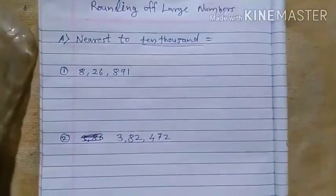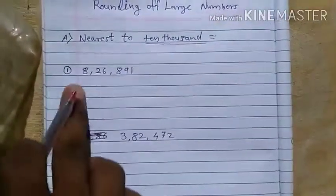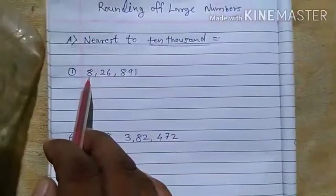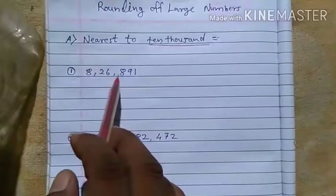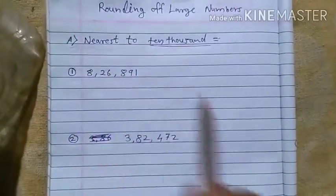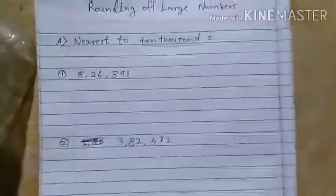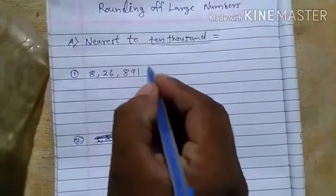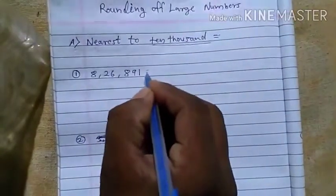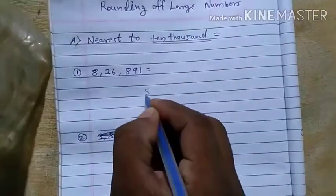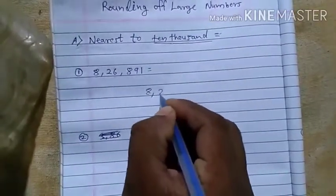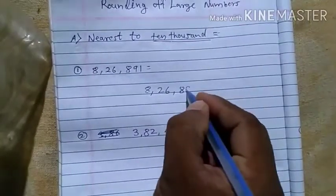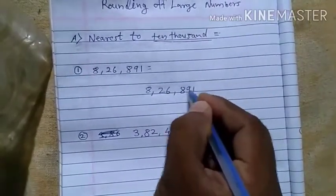We see Example 1: 826,891. Firstly, write the number — 826,891.